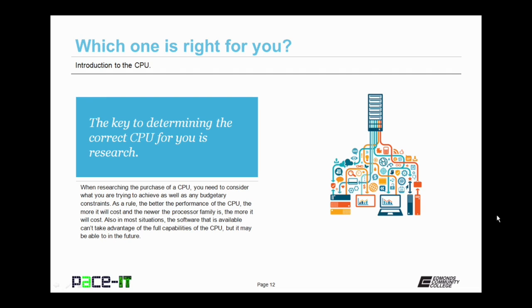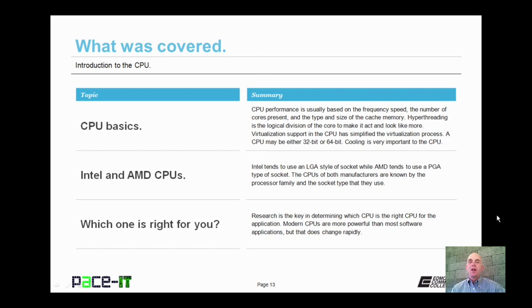And the newer the processor family is, the more it will cost. Also in most situations, the software that is available today can't take advantage of the full capabilities of the CPU. So you may not want to buy the most cutting edge current version. But as the processor's performance increases, they develop software to take advantage of more and more of those capabilities. So which CPU is right for you? I can't answer that for you. You're going to have to be the one to do the research.